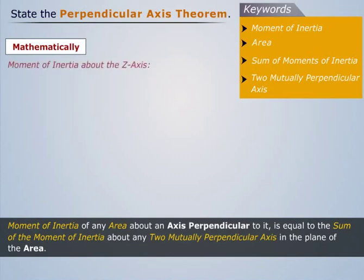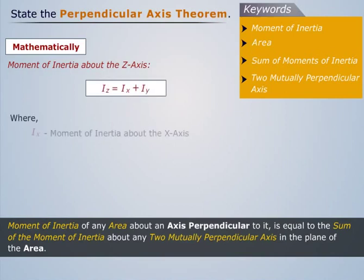Mathematically, moment of inertia about the Z axis is given by the expression Iz = Ix + Iy, where Ix is the moment of inertia about the X axis and Iy is the moment of inertia about the Y axis.